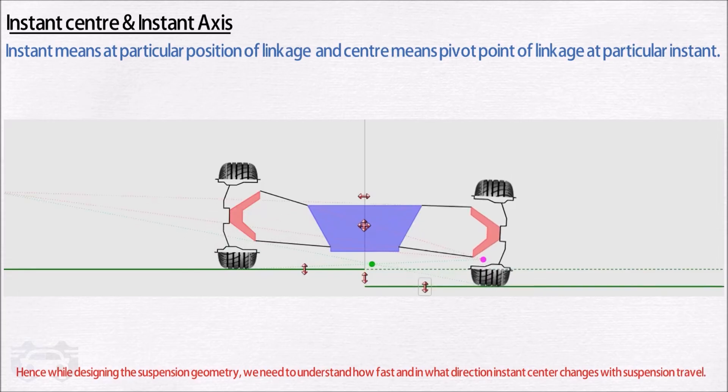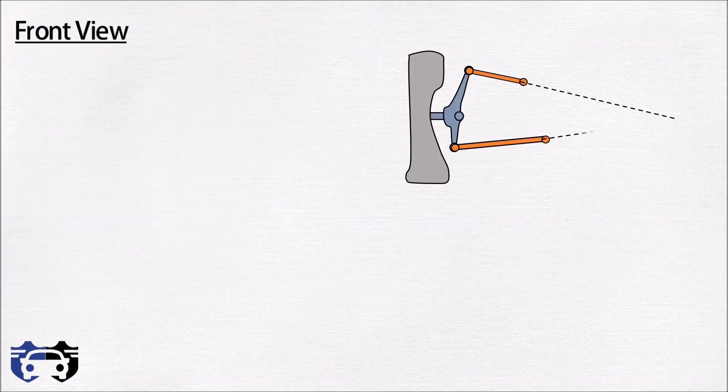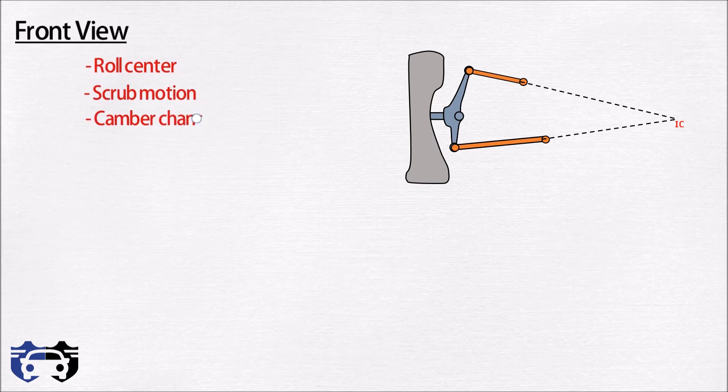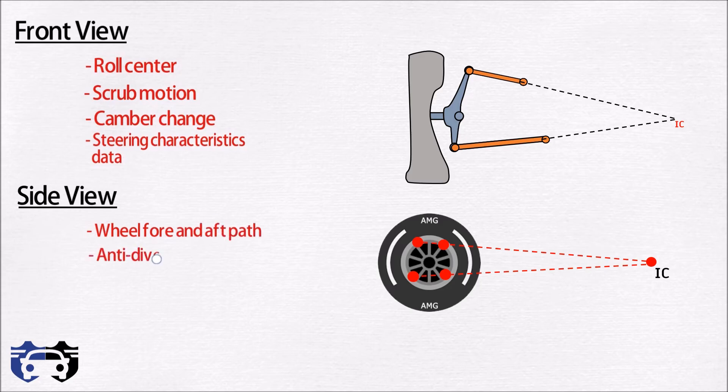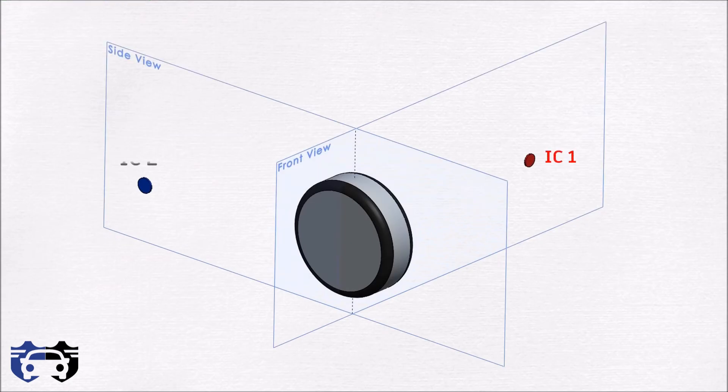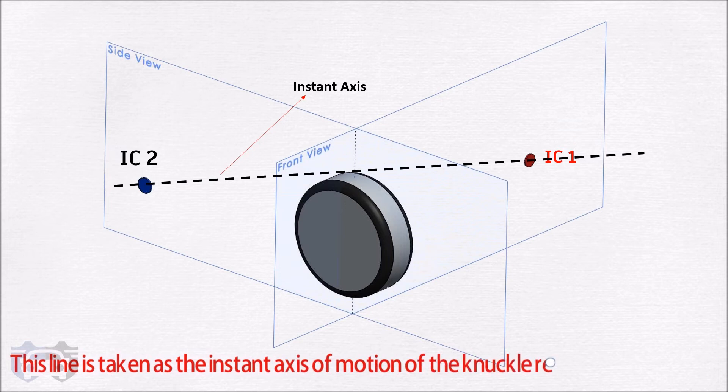In suspension design it is convenient to break down the three-dimensional view of assembly into two dimensions. So in the front view, on making the projection from the linkages we will get the instant center, and this instant center will define the roll center, scrub motion, camber change, and data required for studying the steering characteristics. Similarly in the side view, on projecting the linkages mounting points we will get the instant center which defines the wheel fore and aft path, anti-dive and anti-squat geometries, and caster change. Let the instant center in the front view be IC1 and in the side view be IC2. On joining IC1 and IC2 we will get an axis called instant axis. This line is taken as the instant axis of motion of knuckle relative to car body.